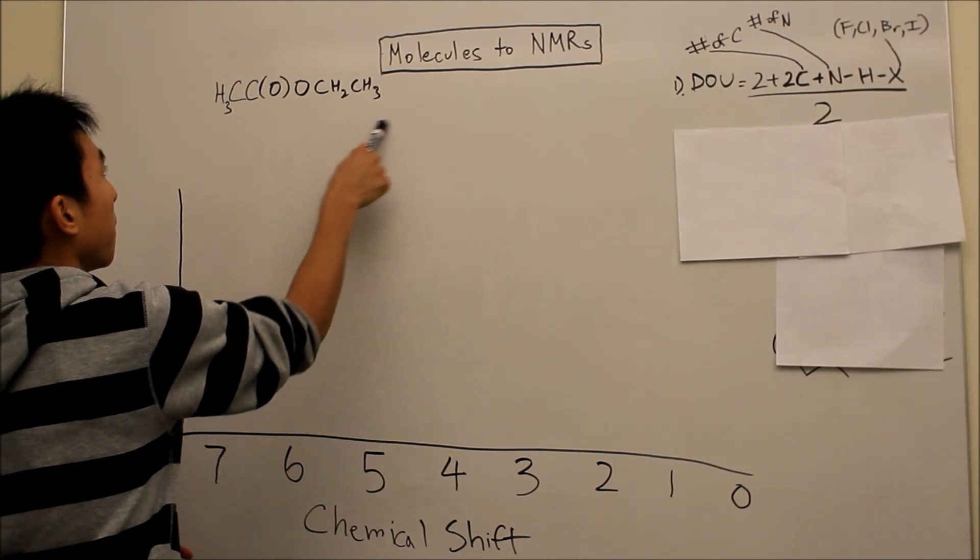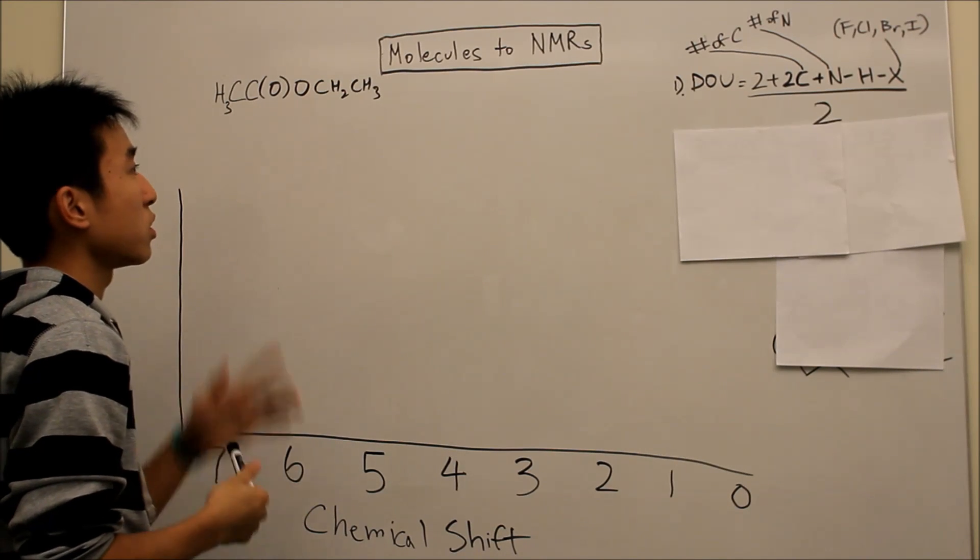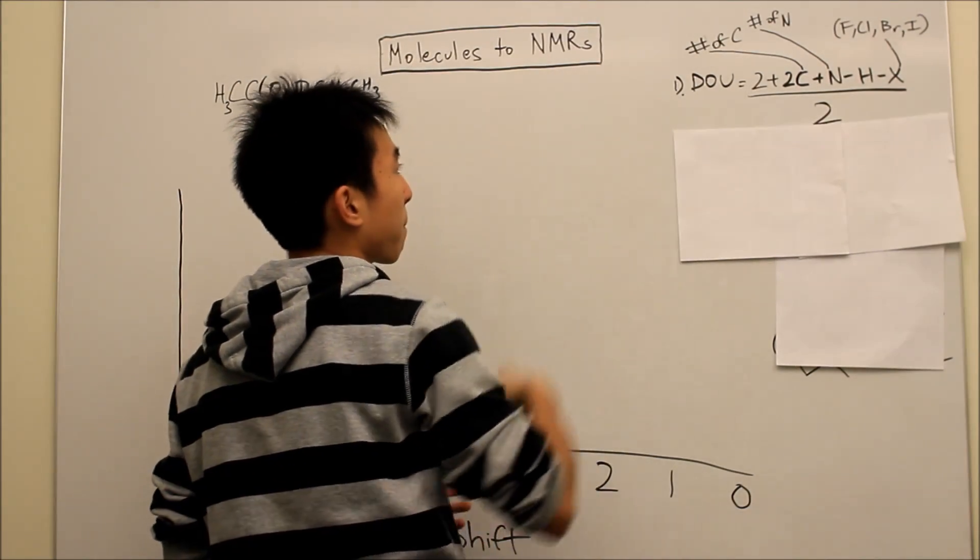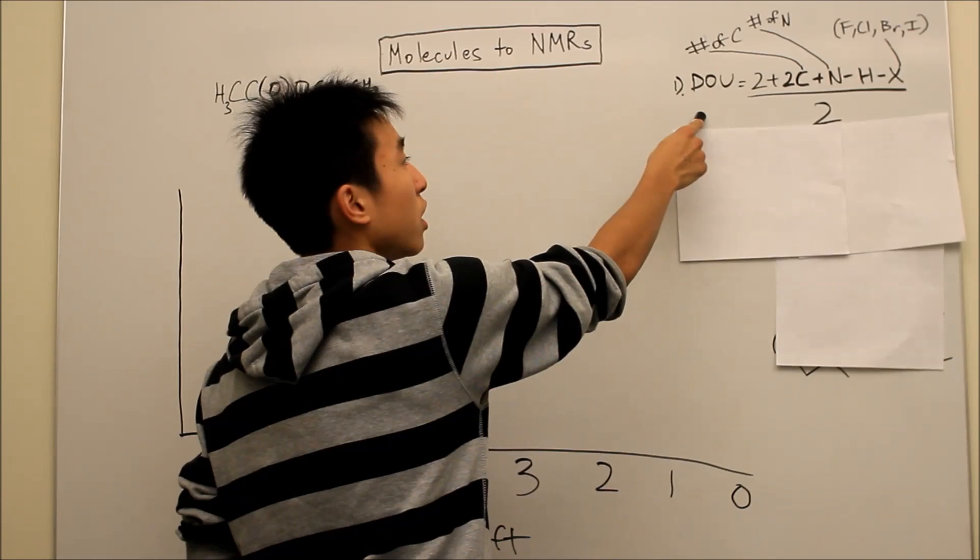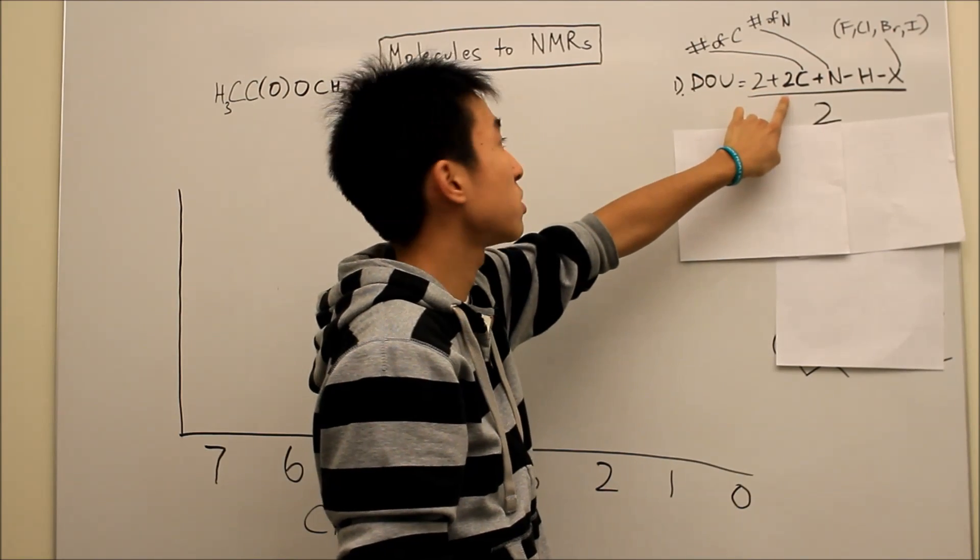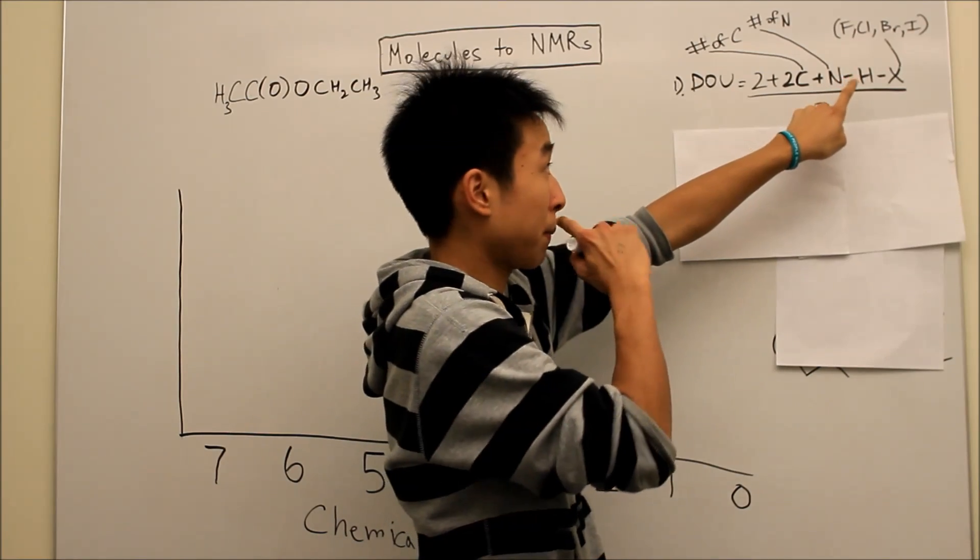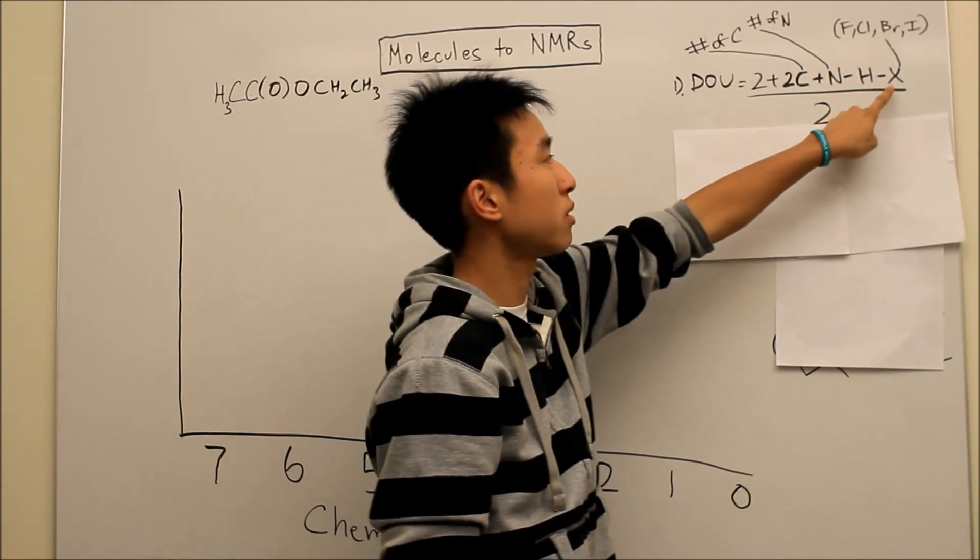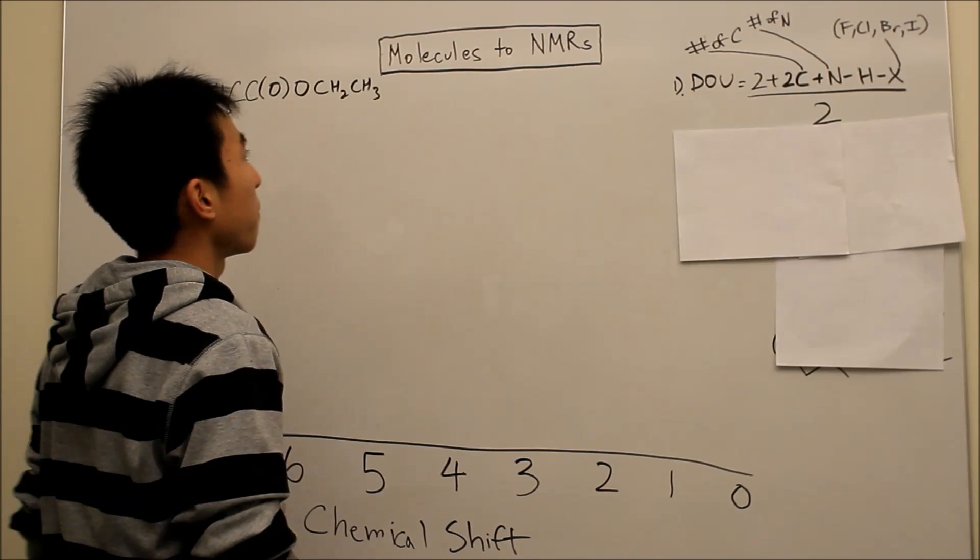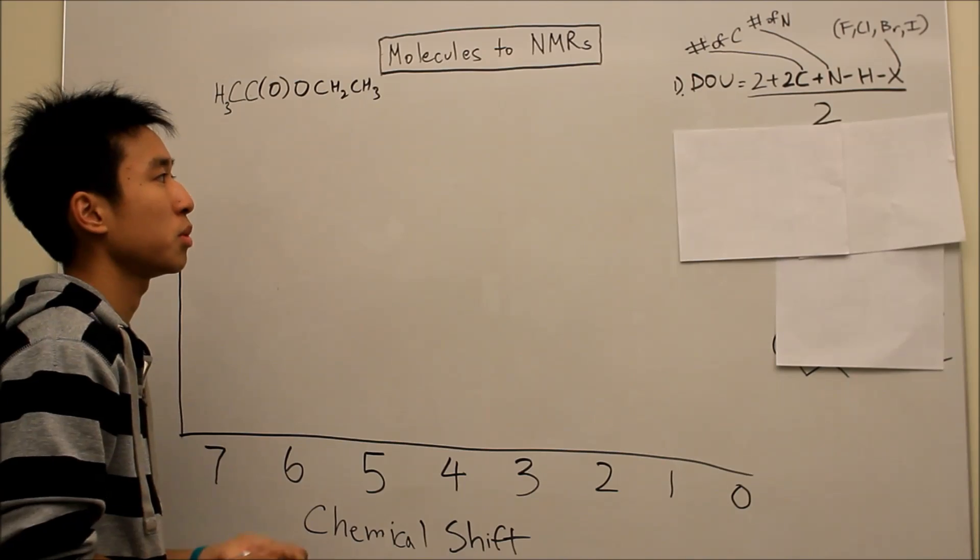So let's say if I give you this chemical formula HC(O)OCH2CH3, I want you to first get the molecule from it, so you can pause your video if you know how to do that. If not, we'll use degrees of unsaturation here. So the formula for degrees of unsaturation is degrees of unsat equals 2 plus 2 times the number of carbons